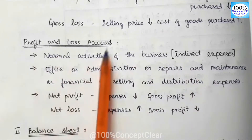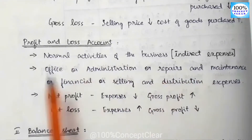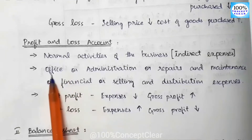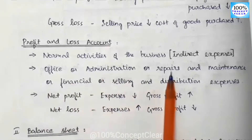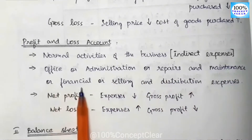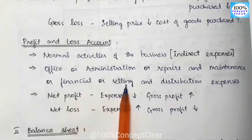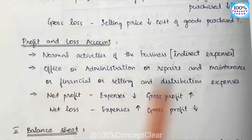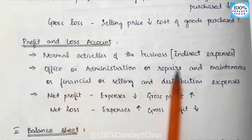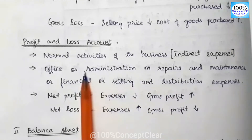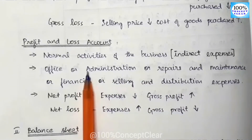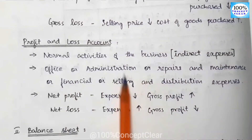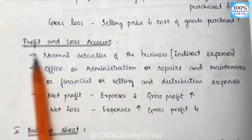The Profit and Loss Account deals with Indirect Expenses. All these normal activities — buying, manufacturing, and selling — are normal business activities, and all these are recorded in the profit and loss account.